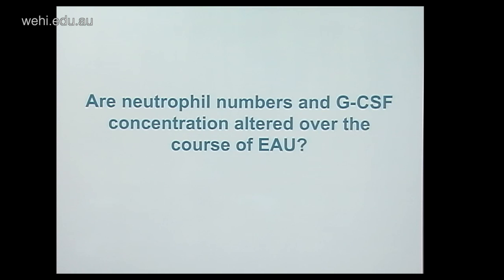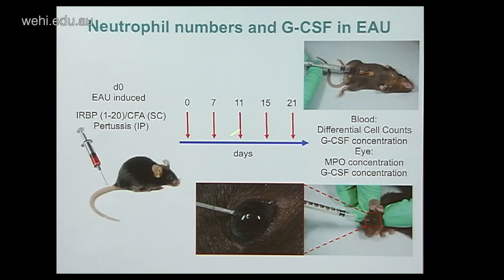The first question we wanted to ask was: are neutrophil numbers and GCSF concentration altered over the course of EAU? We induced EAU in wild-type mice and measured several things in the blood and the eye at time points throughout the course of EAU. In the blood, we did differential cell counts and measured GCSF concentration. In the eye, we took fluid directly and measured both GCSF concentration and MPO concentration as a surrogate marker for the presence of neutrophils.